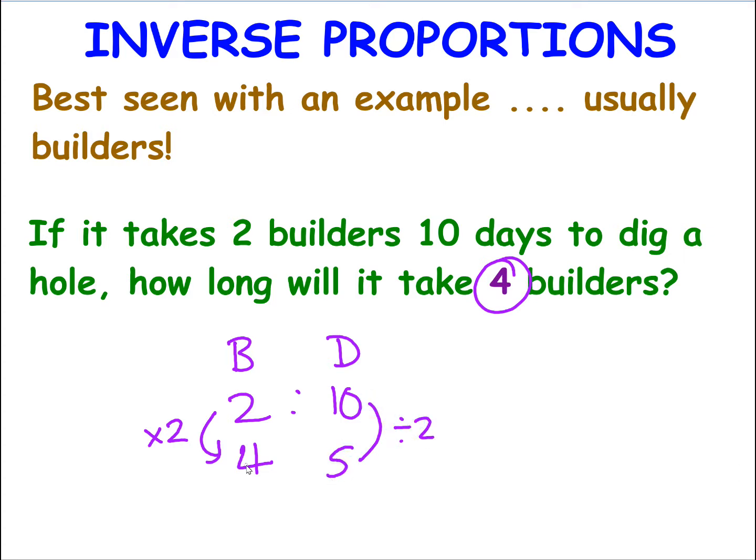So the inverse proportion means on one side, I'm using my scale to multiply. Therefore, on the other scale, I'm using my scale to divide. Because as one thing gets bigger, the other thing is getting smaller. This is what we call an inverse proportion.